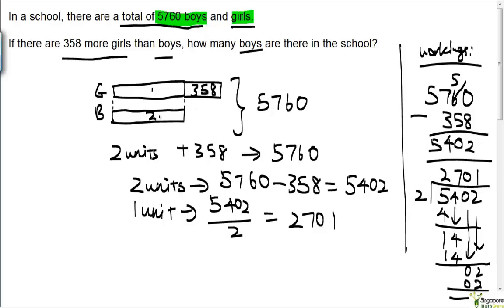So one unit here is 2701. This is also 2701. So there are 2701 boys. This here is our answer.